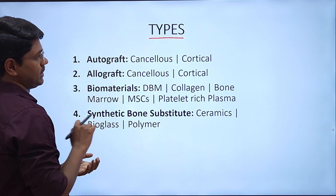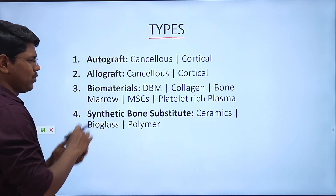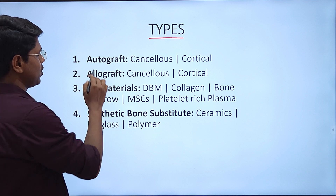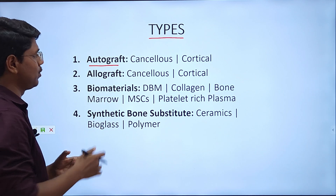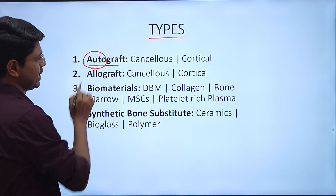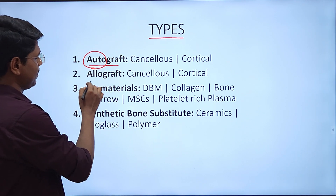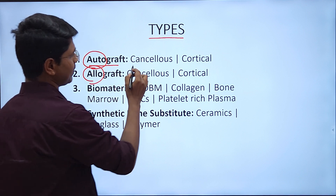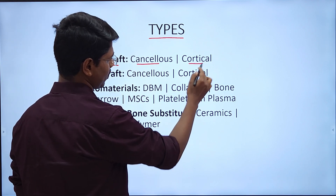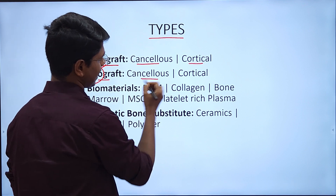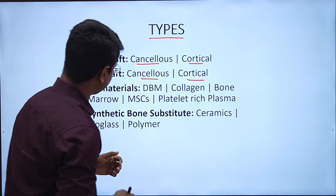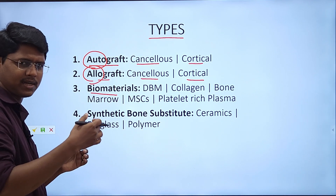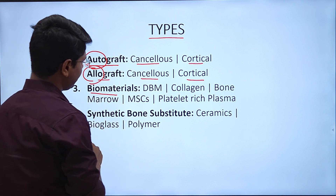First, the types of bone grafting — just refreshing your memory. The first type is autograft, or bone autograft: 'auto' means same animal, so you are using the graft from the same animal. Allograft: the animal species is the same but from a different animal. It can be cancellous bone graft or cortical for autograft, and similarly for allograft it can be cancellous or cortical. There are also biomaterials.